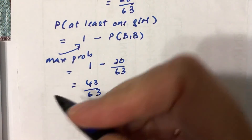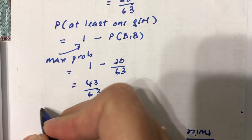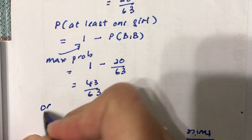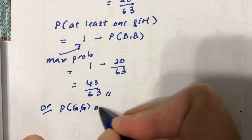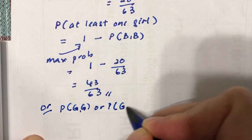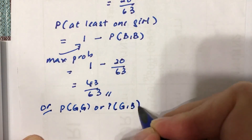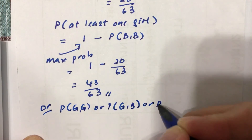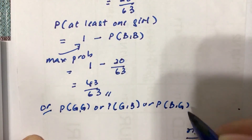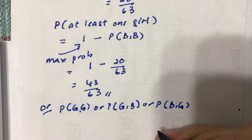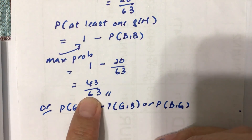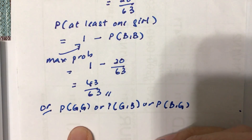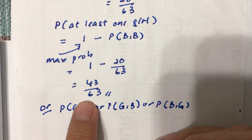There is another, longer way to find the probability of at least one girl: you can calculate girl-girl, plus girl-boy, plus boy-girl individually and add them up. You should get the same answer of 43 over 63. Give it a try!